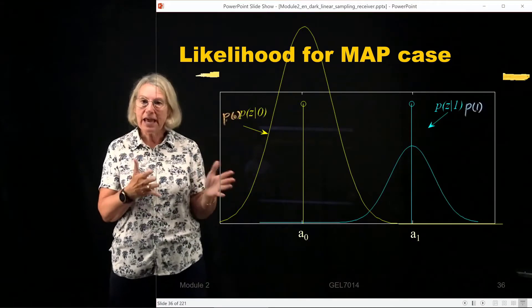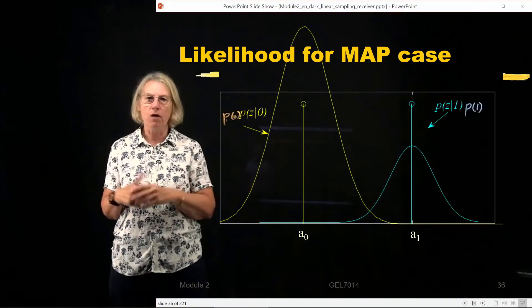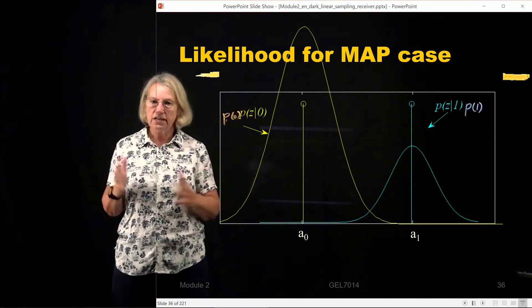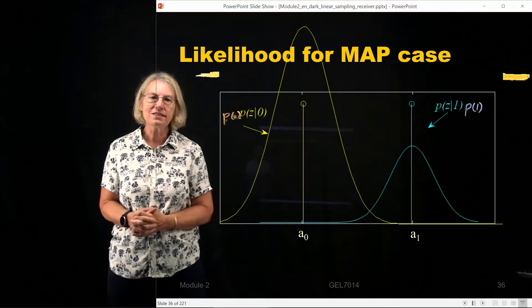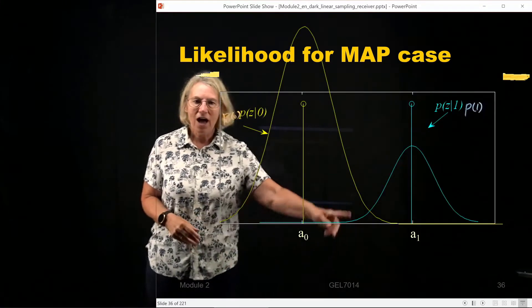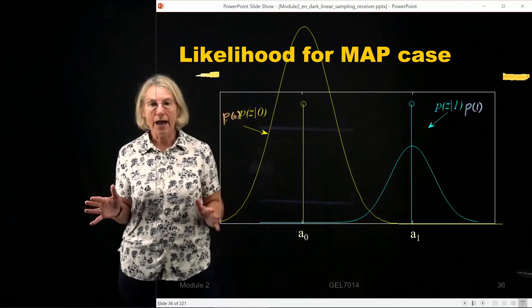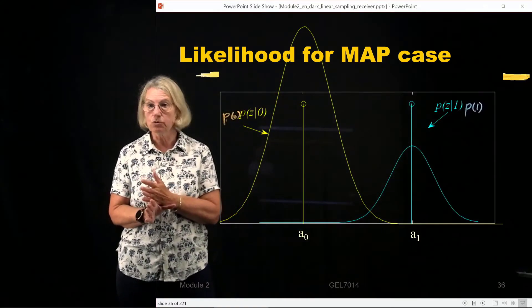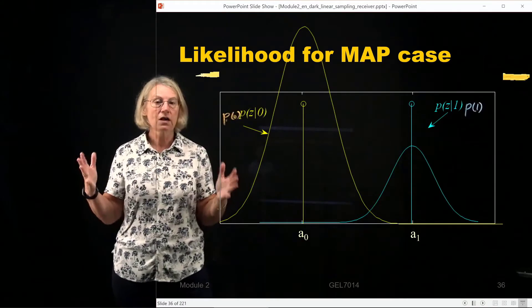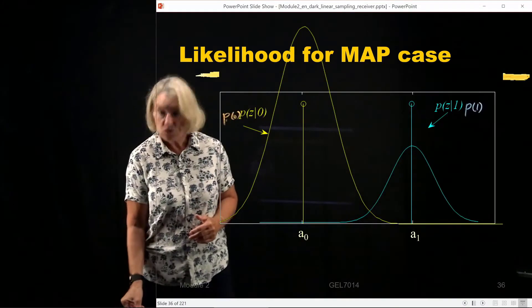But for the MAP case, assuming they're not equal priors, we have a difference here. And we can see that the intersection of the two curves no longer happens at the midpoint between the two. So it's a difference when we introduce these weighting functions.